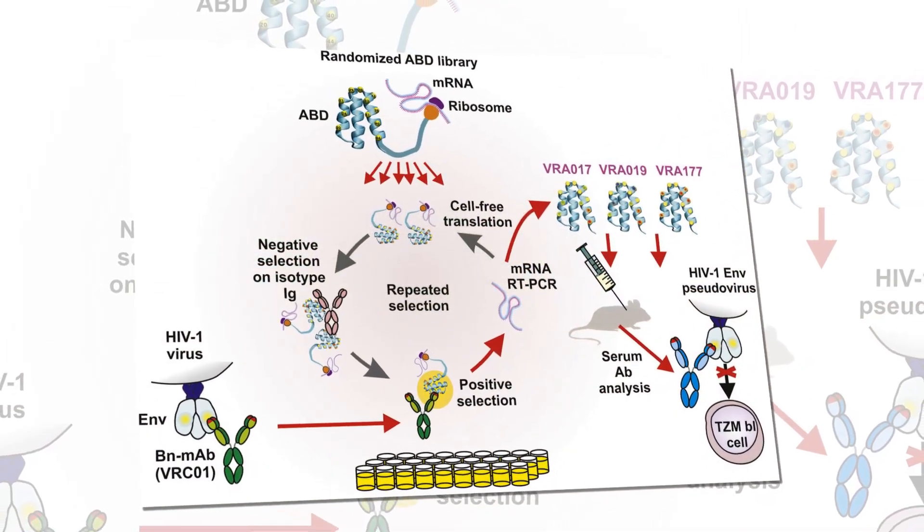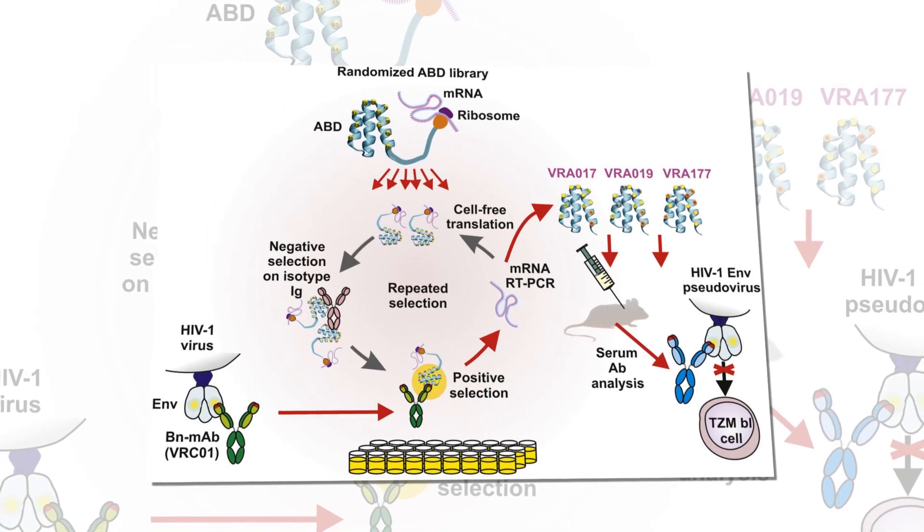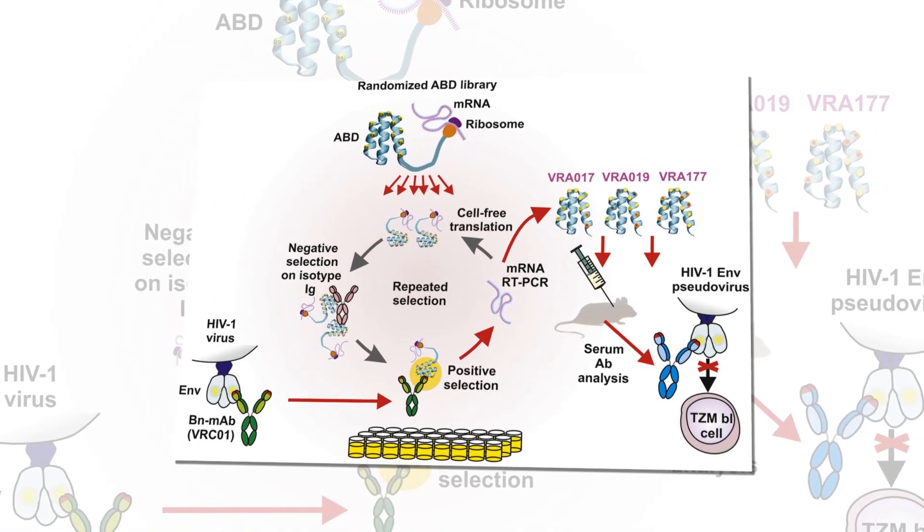Over years, Dr. Weinberger and his colleagues created what they now call therapeutic interfering particles, or tips, which have about half of the genetic material of normal HIV.